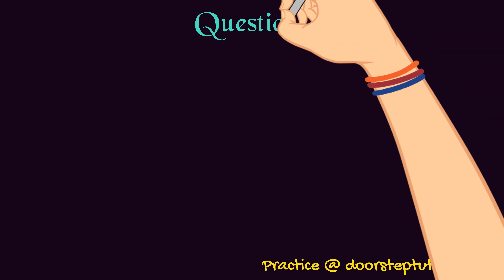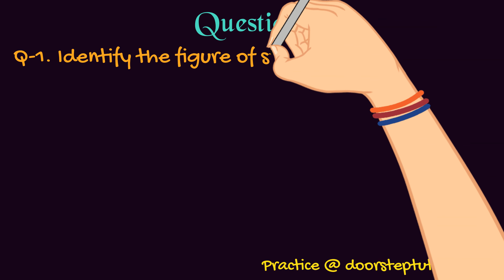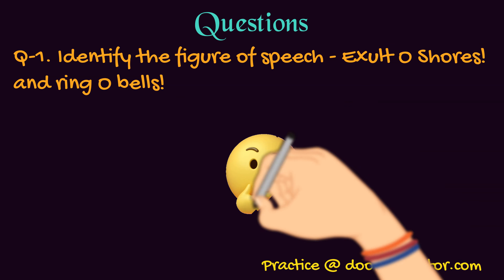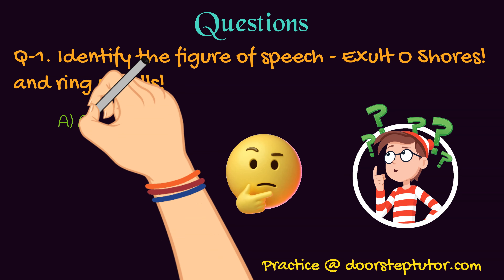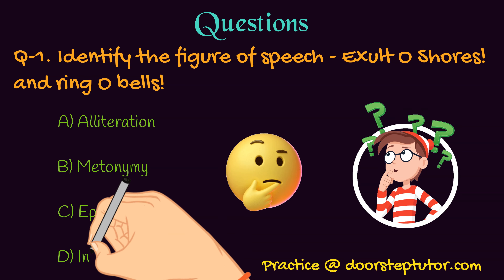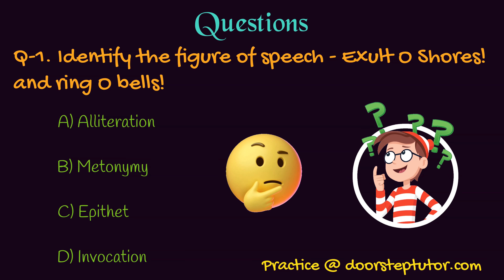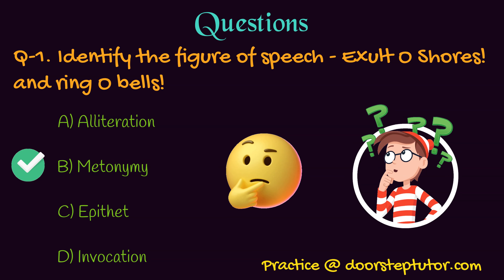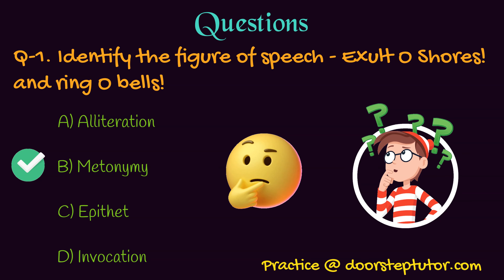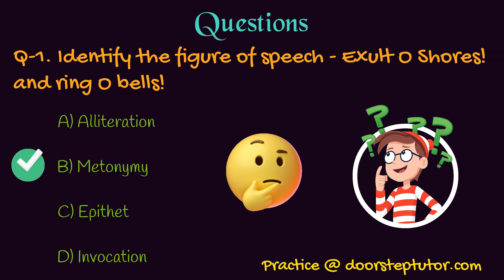Now we shall look into some MCQs to boost your memory. 'Exult, oh shores, and ring, oh bells.' Identify the figure of speech. Option A: alliteration. Option B: metonymy. Option C: epithet. Option D: invocation. The answer is Option B, metonymy. When one thing is referred to by another, then it is metonymy. Here, 'shores' means the crowd on the shores and not the exact shore — so it's metonymy.